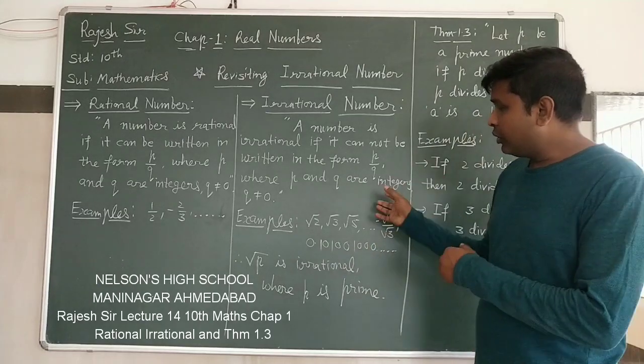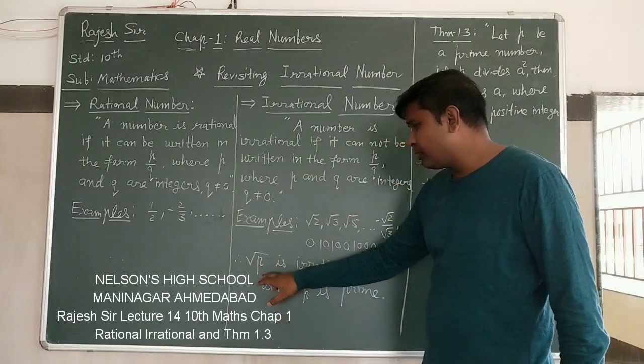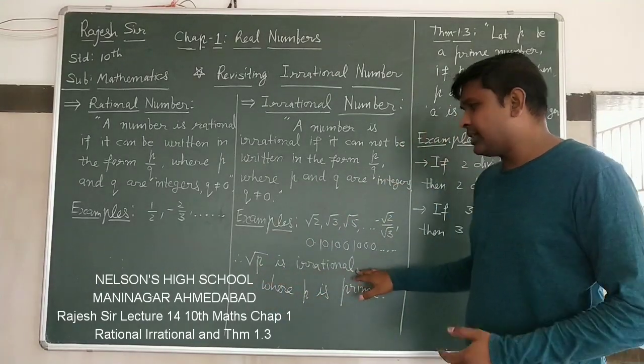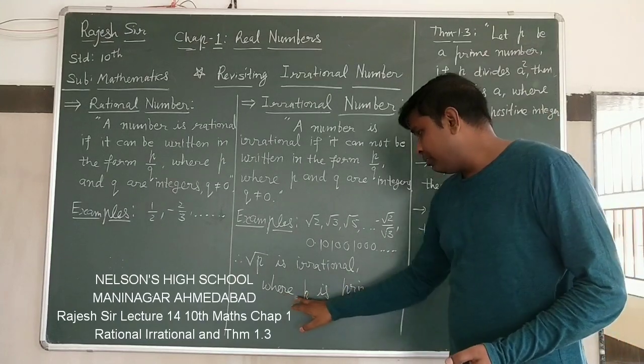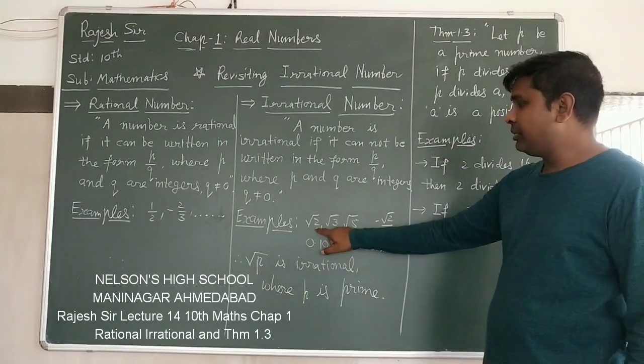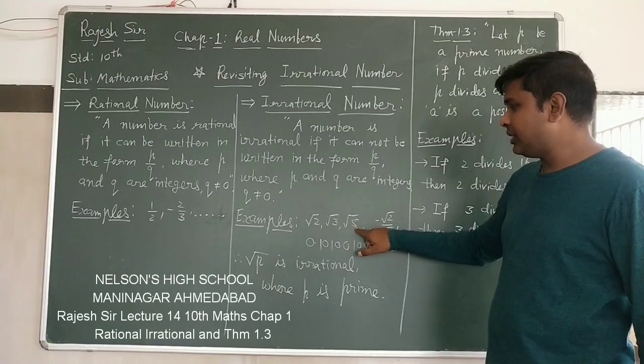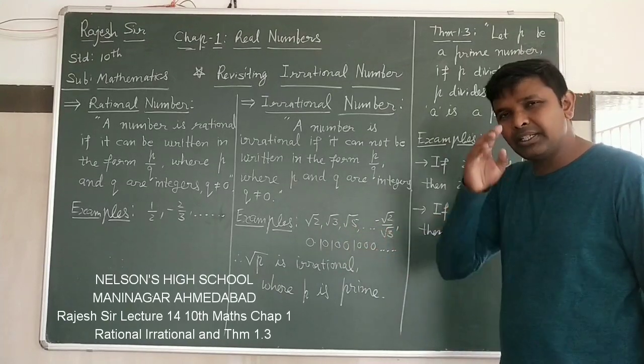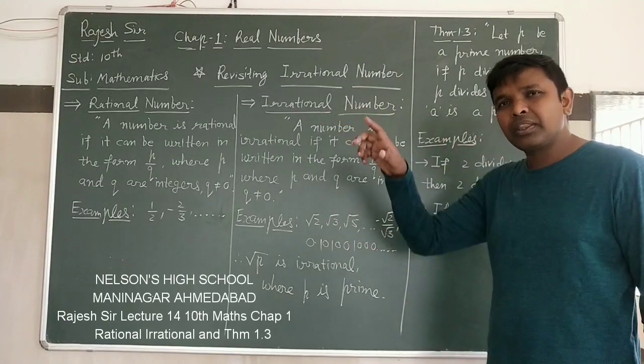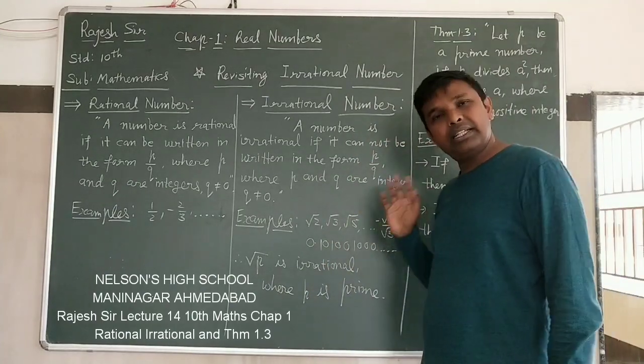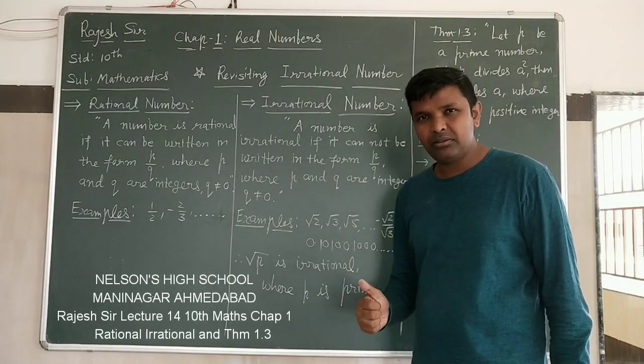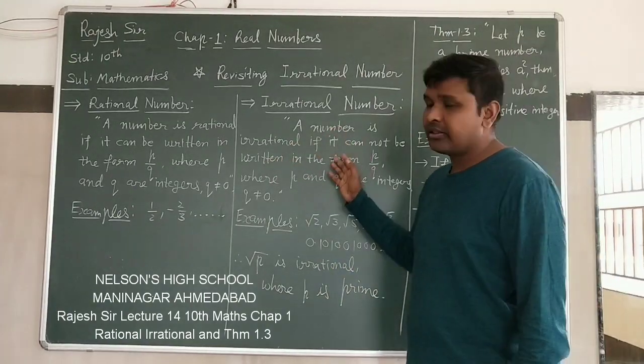So, what we can write at the conclusion that root P is irrational, where P is prime. P is prime. 2, 3, 5, all prime numbers. If the prime numbers are in root, we can say directly that they are irrational numbers. So, I think you understand the rational and irrational.